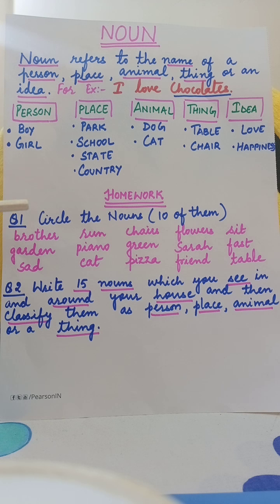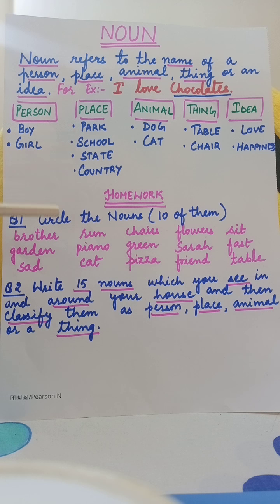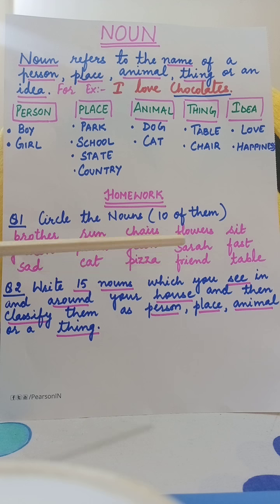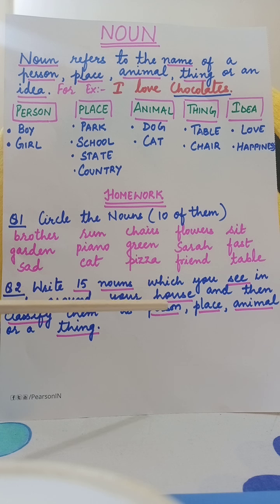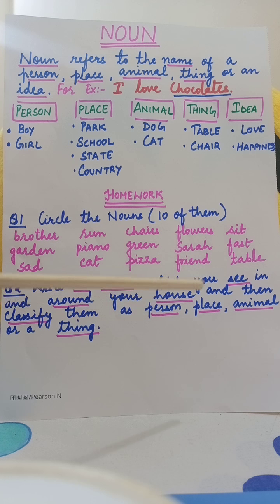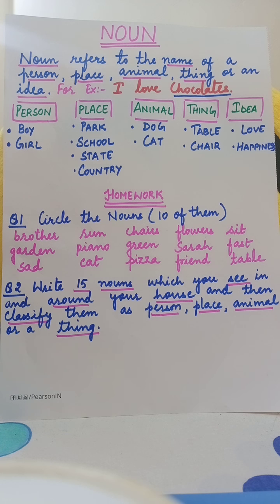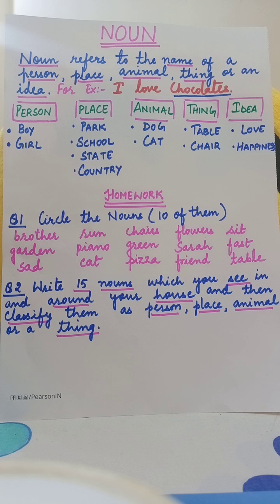Your homework for today: I have written a few words here. Out of these, you will circle 10 words and those 10 words should be nouns. Next, you will write 15 nouns which you see in and around your house, and then you will classify them as person, place, animal, or a thing. Thank you, and wait for the next video for the kinds of noun.